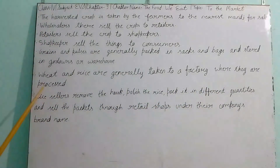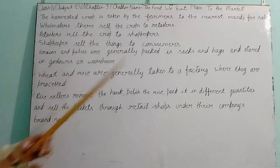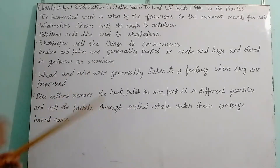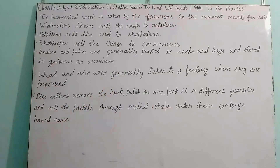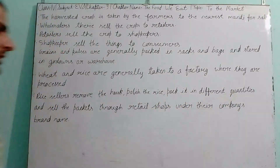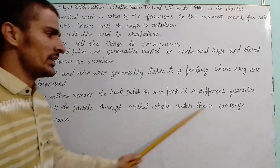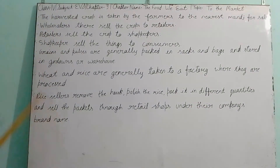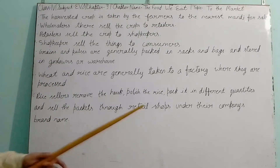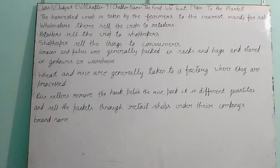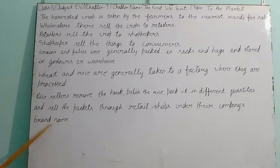The grains are stored in bags and sacks and then sent to the factory for processing. Rice sellers remove the husk, polish the rice, and pack it in different quantities. They remove non-required materials such as husk, dust, and other things, and then it is polished in the factories.